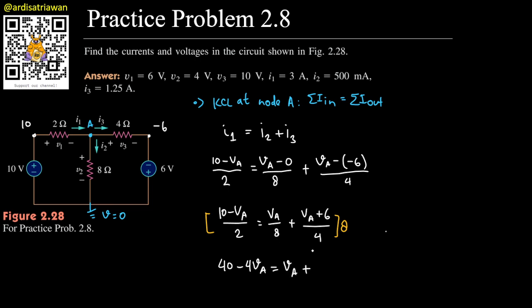And then this one will cancel into 2Va plus 12.